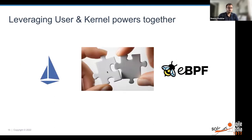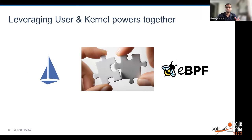A question that always comes up when I'm talking with customers or in the community is: these technologies provide similar things — when should I use what, and can I leverage them together? For me, the key is that where this entire space is heading is we should be able to leverage the user and kernel space together to get the advanced functionality we want. No one technology is perfect — they all have benefits and limitations — but if you're able to combine their power, you get the best of both worlds. And that's what I want to focus on next.